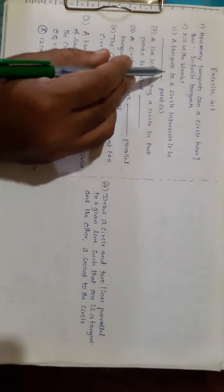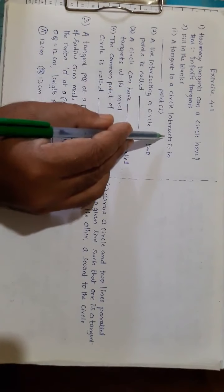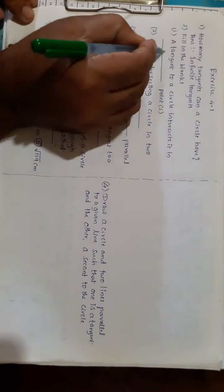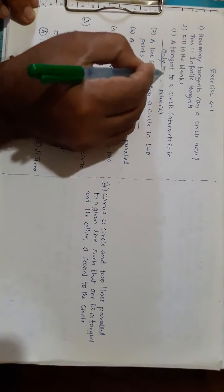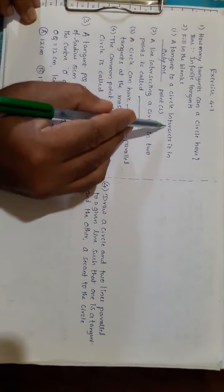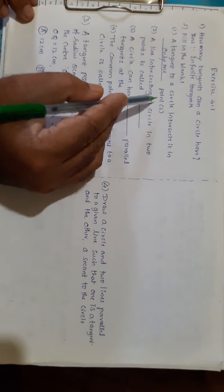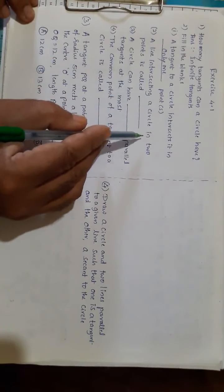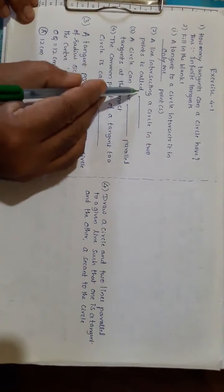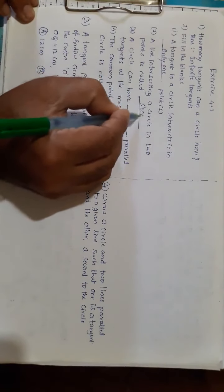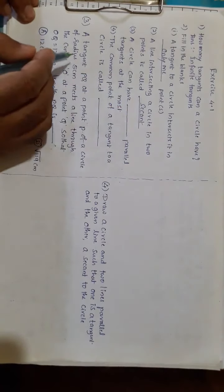Second question: fill in the blanks. A tangent to a circle intersects at only one point. A line intersecting a circle in two points is called a secant.